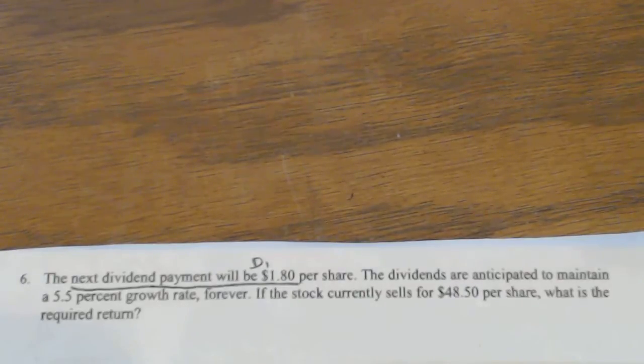Okay, page 46, problem number 6. The next dividend payment will be $1.80, which, since it's the next dividend payment, that's D1. The dividends are anticipated to maintain a 5% growth rate forever.